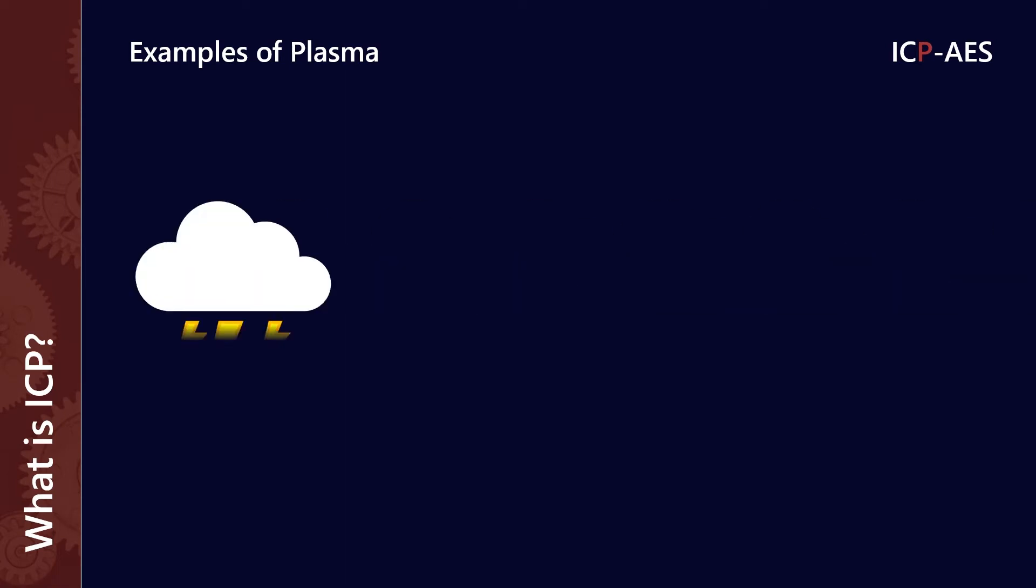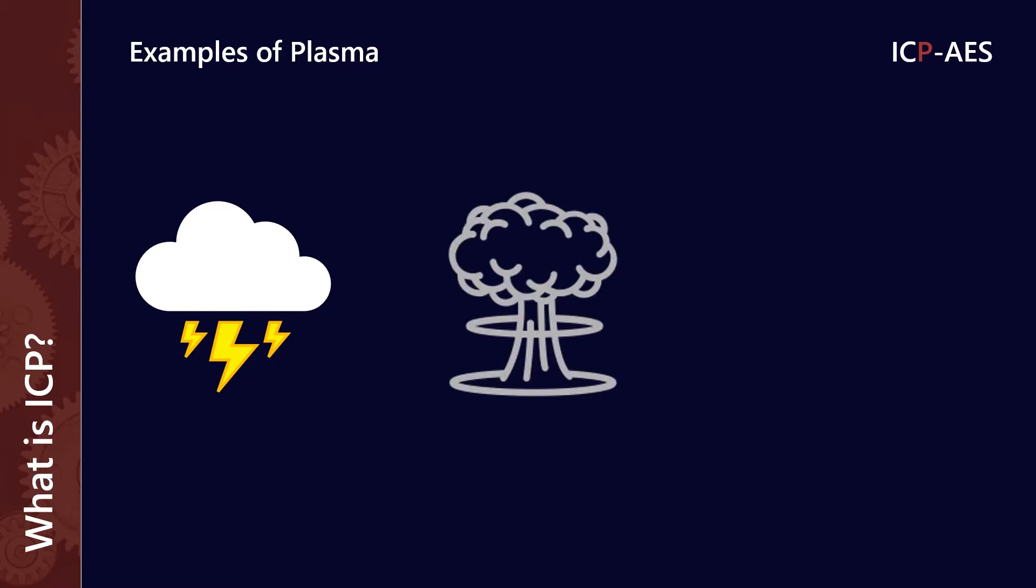We are actually familiar with some examples of plasma. So lightning, for example, the temperatures in lightning are high enough that that is effectively plasma. Nuclear fireballs are another example of plasma, and so is solar wind. So we do come across them, but maybe we don't interact with these in our everyday lives.